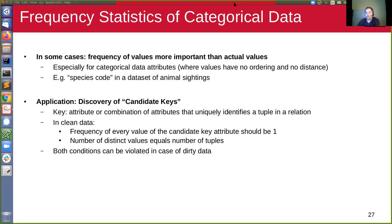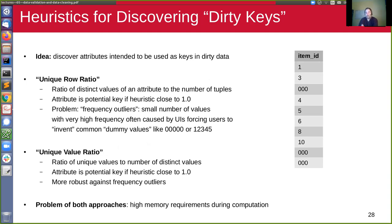The problem is that with dirty data, both of these conditions can be violated. For example, consider a column called item ID that we think is a key column. But there are three strange entries — zero, zero, zero — that are repeated. The question becomes: is this actually a key column that is just dirty, or is it some other kind of column? The techniques proposed by Hellerstein use heuristics to make an educated guess.